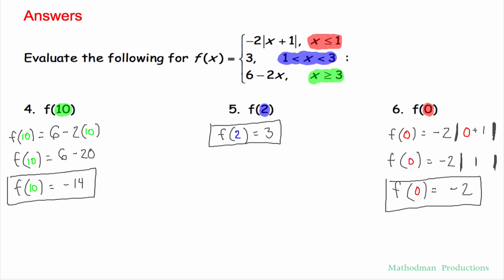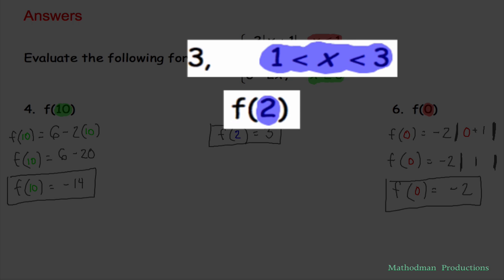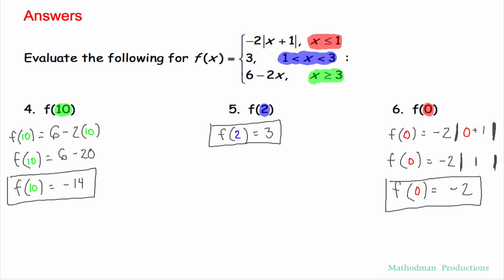Number 5. 2 is between 1 and 3. So I'm going to use that second equation in blue. And that one's pretty easy because no matter what, the function equals 3. No matter what value you plug in in between 1 and 3.